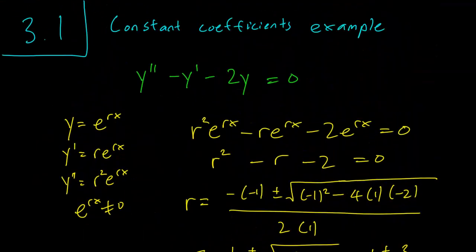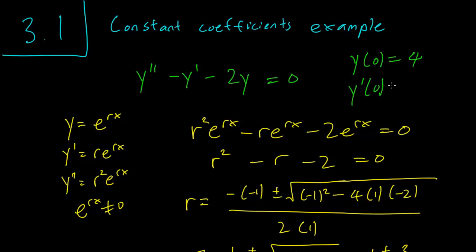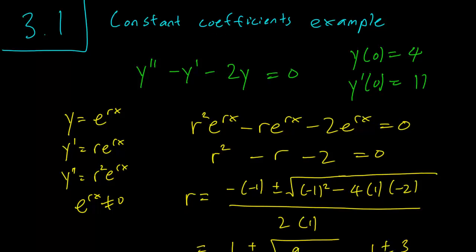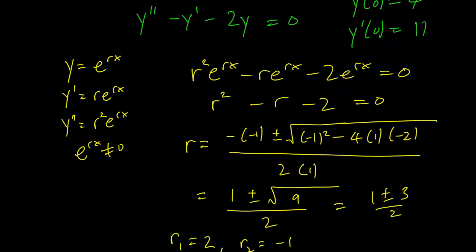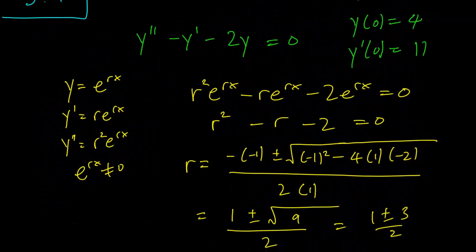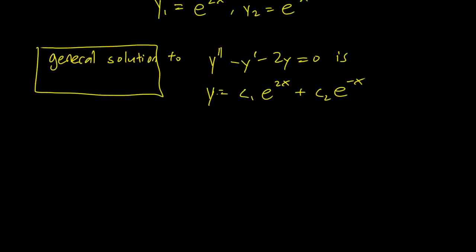But let's ask for an initial condition as well. So let's say that we have, this is an initial value problem. So we have y(0) equals 4. Now, here's the thing about these problems in a second order world, is that you actually need two pieces of information, the value of y and some value of the derivative. So let's say y prime of 0 equals 11. So we have also this extra information. We can find a specific solution.